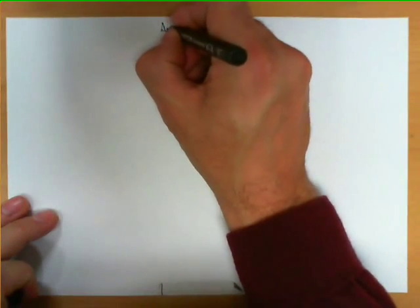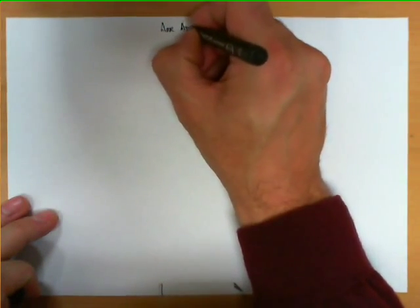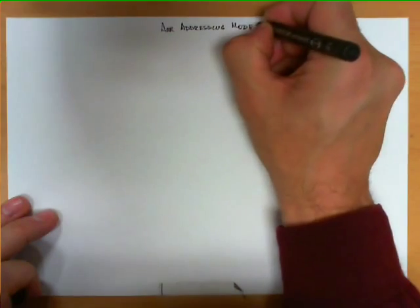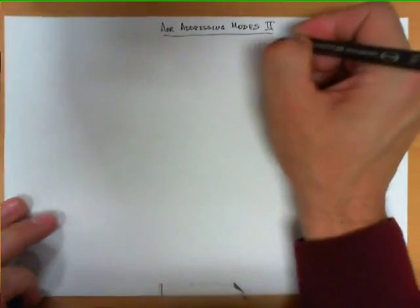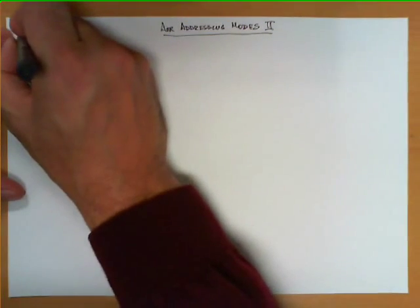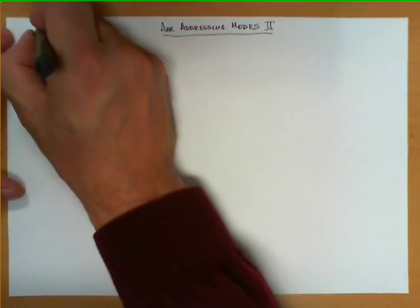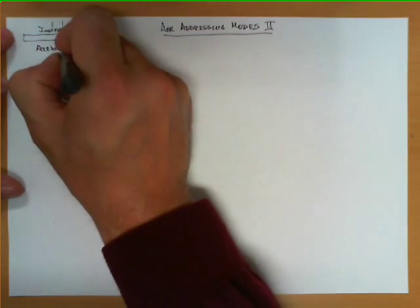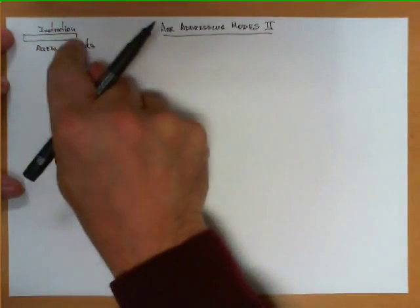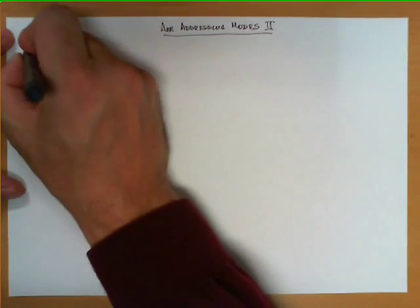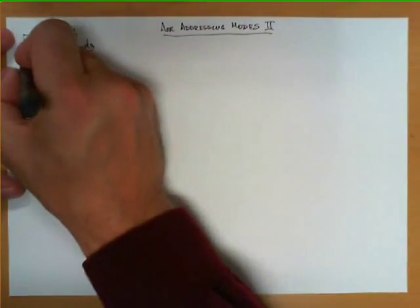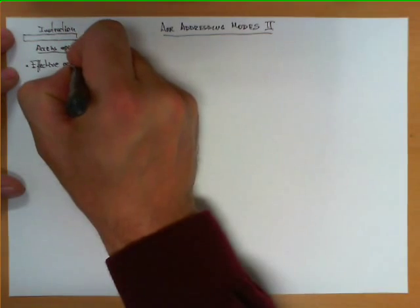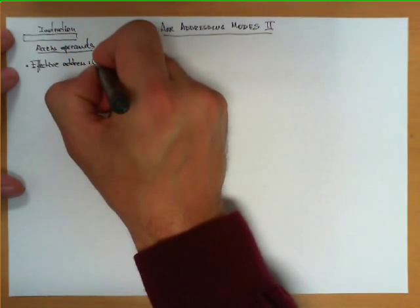In this video, we're going to explain three more addressing modes of the AVR architecture. Let's remember that addressing modes are those techniques that the microprocessor uses to access the operands that are specified by different fields of the instruction. We're going to use the effective address of the operand, and we're going to represent it by ADD sub E.